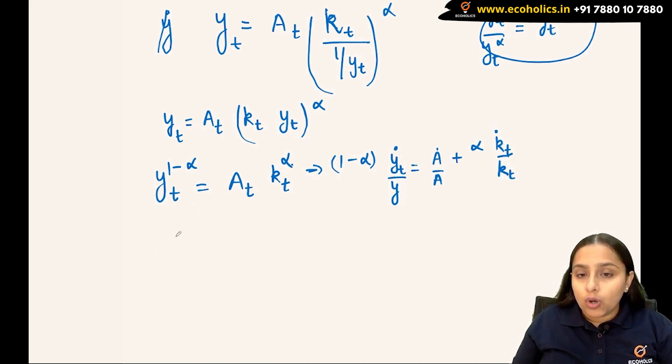Solving this further will give me ẏ/y = 1/(1-α) × ȧ/a + α/(1-α) × k̇/k. This will be my growth rate in per capita terms.